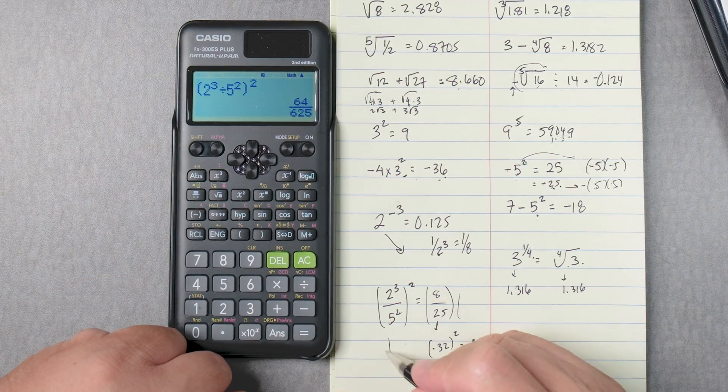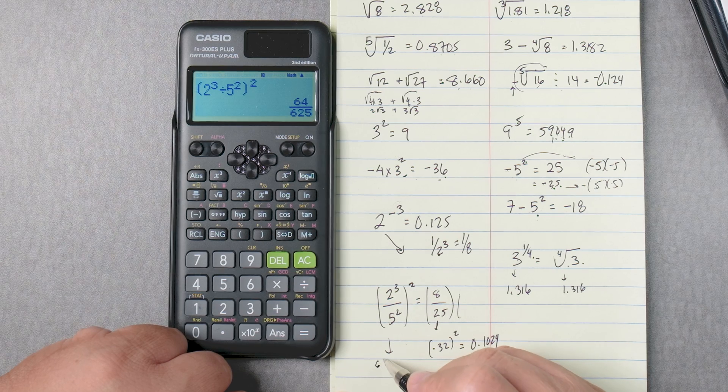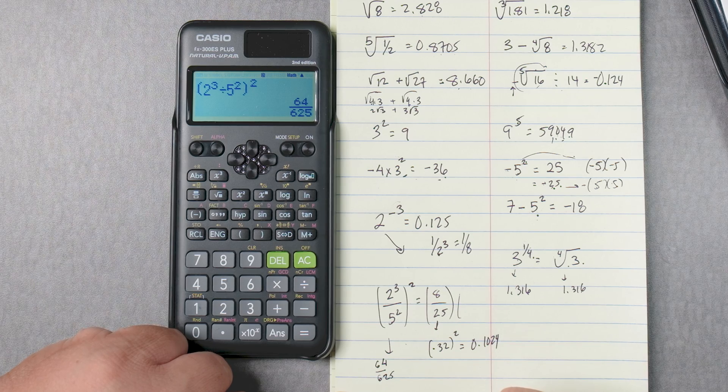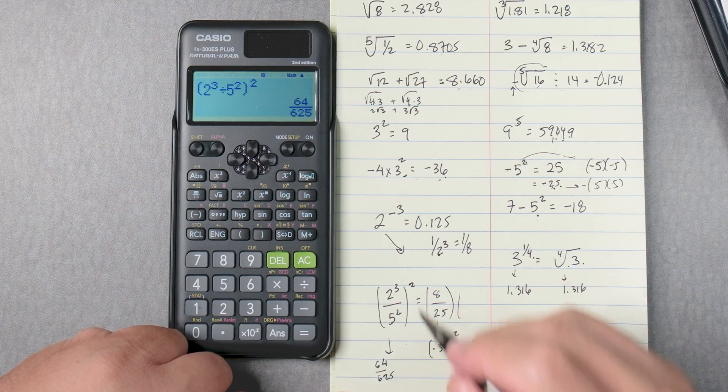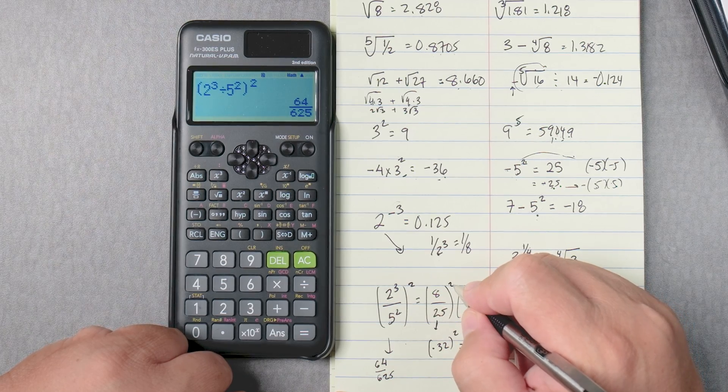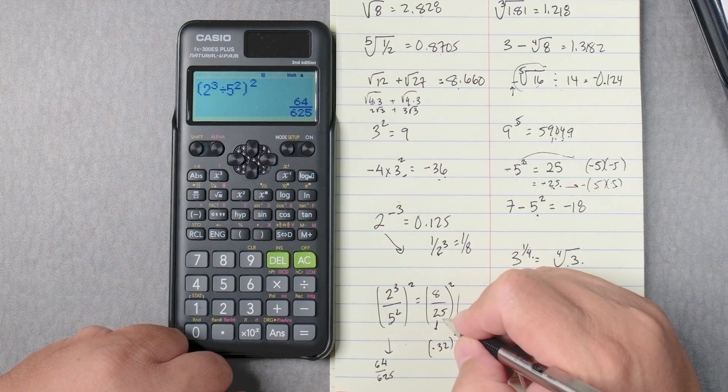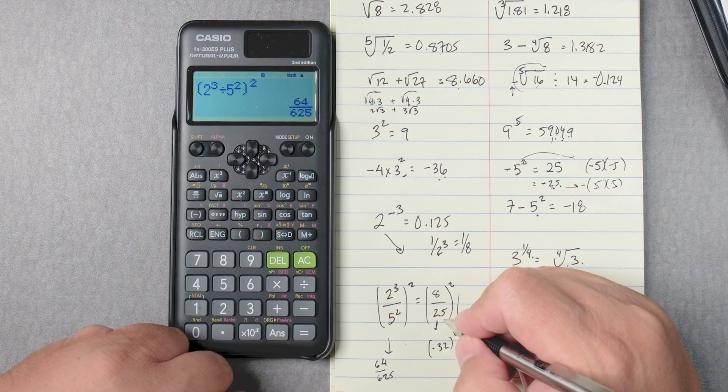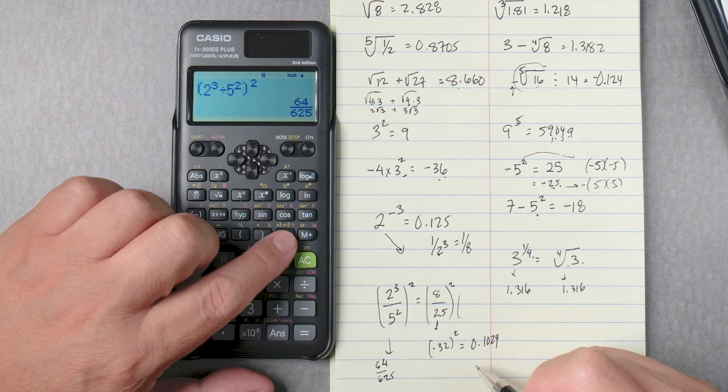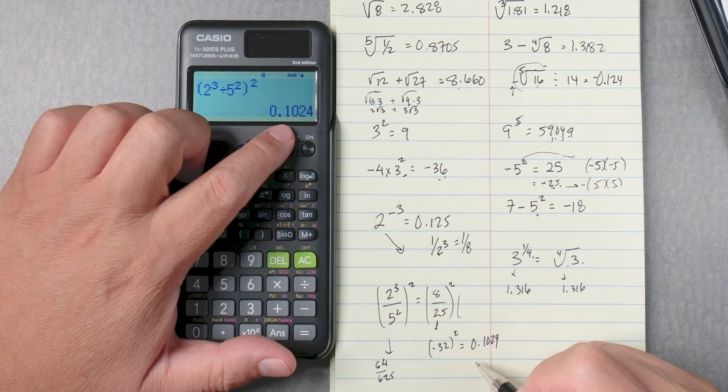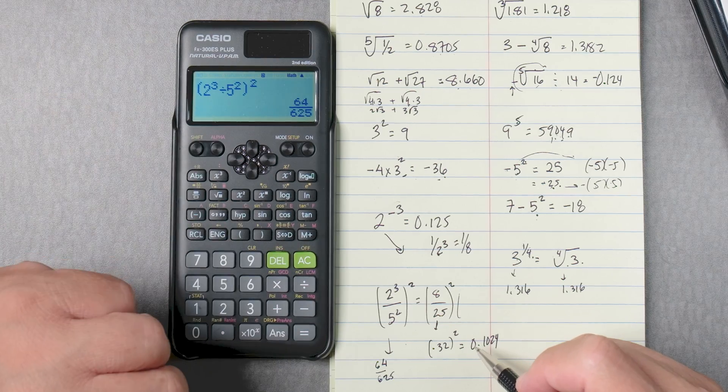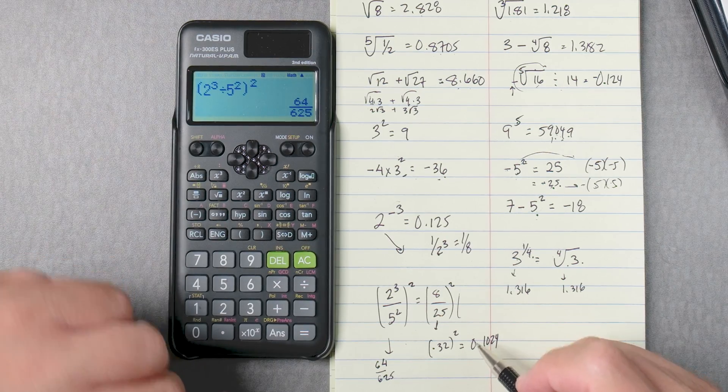And then we get 64 over 625. And that's true because this is 8, this is 25, but then when you square it, this is going to be 64 and this is going to be 625. But I want an answer like over the decimal and it's 0.1024. You press SD again. It gives you 64 over 625, which is reduced.